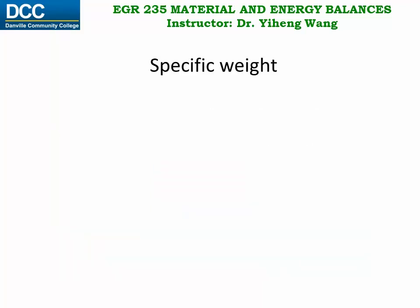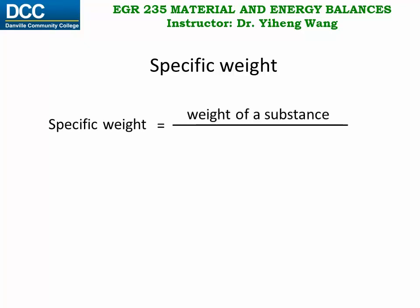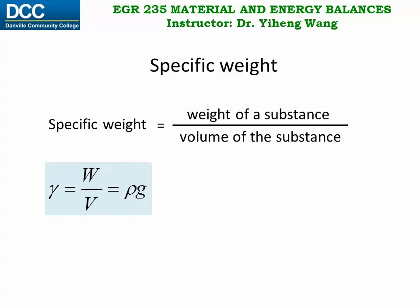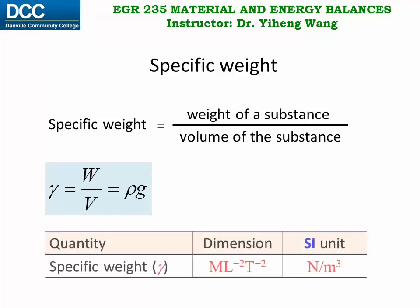Specific weight, which should not be confused with specific volume, is defined in a similar way as density, but it is the weight of the substance divided by the volume it occupies. Therefore, the formula is gamma — the Greek letter symbol for specific weight — equals w, the weight, over v, the volume. It is also related to density through g, the gravitational acceleration constant, and its SI unit is newton per cubic meter.